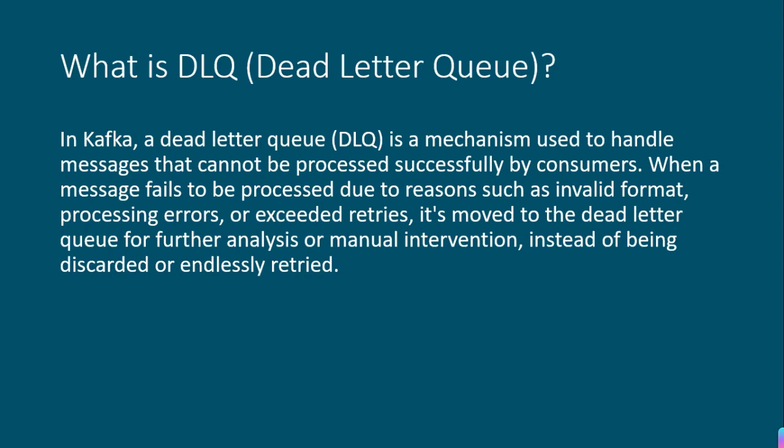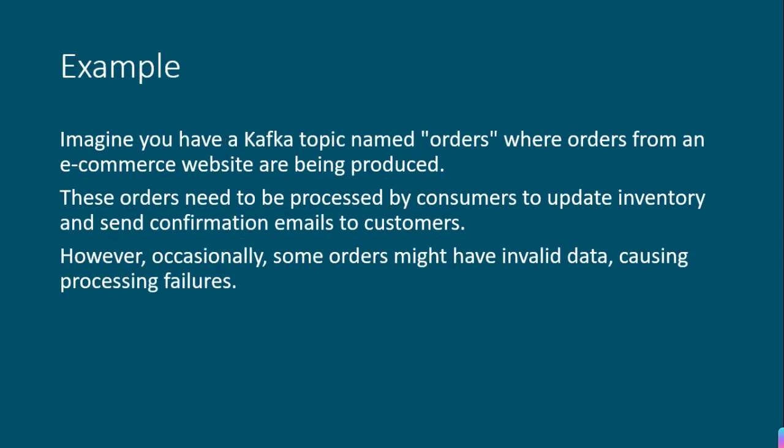We are going to understand this with an example. Suppose we have a topic called 'orders', where orders from an e-commerce website are being produced. There is a consumer which is reading those messages from the orders topic and it is trying to write to the database — updating the inventory or sending confirmation emails to the customers based upon the messages it is reading from the orders topic of Kafka. Now suppose the message which our consumer is reading has some invalid data or is causing some error. In this case, instead of discarding this message, we will be using the dead letter queue.